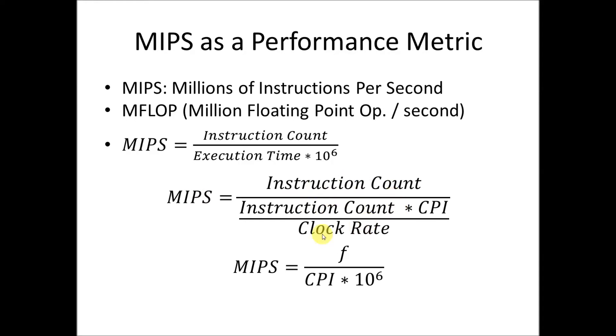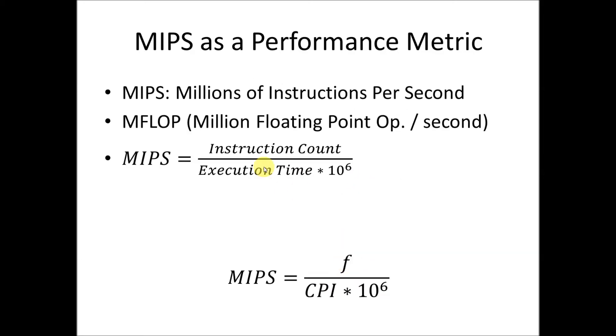And then this is kind of a derivation of replacing our equation for execution time in here. We see that instruction count cancels out and we get clock rate flipping up on top, which gives us this version. So we really only want to pay attention to these two versions of the equation. The second equation is the frequency divided by the CPI times 10 to the 6th again, and we'll go through a couple of examples.